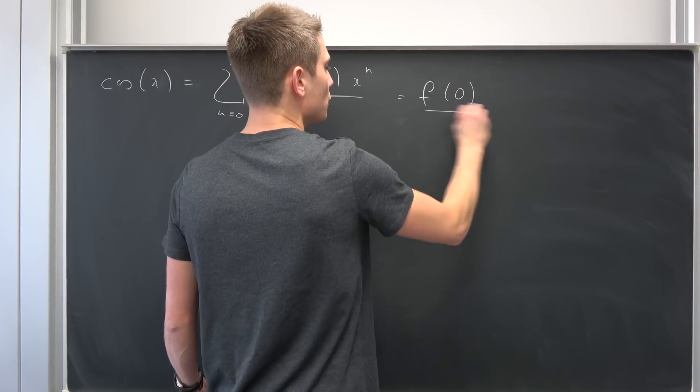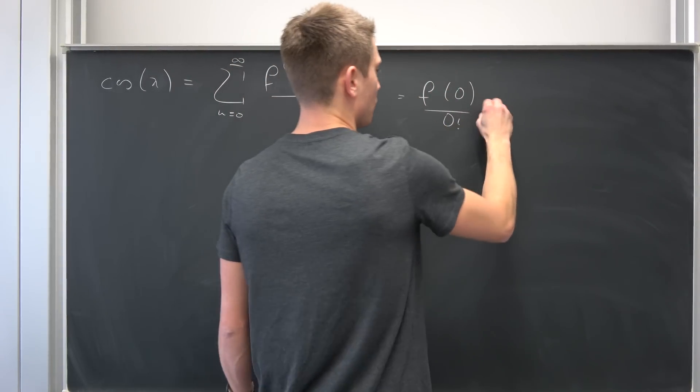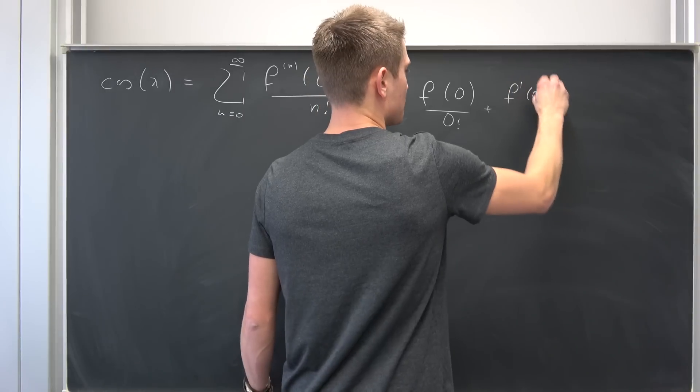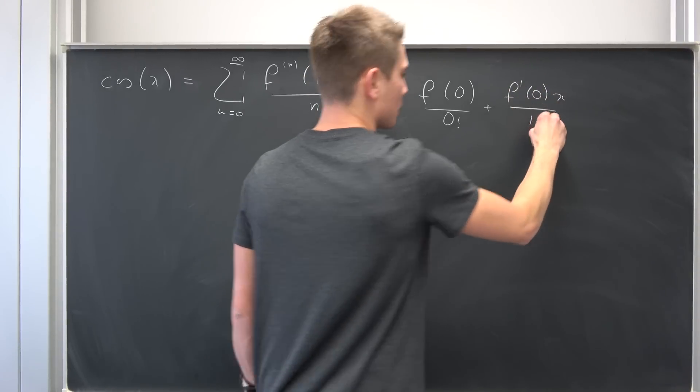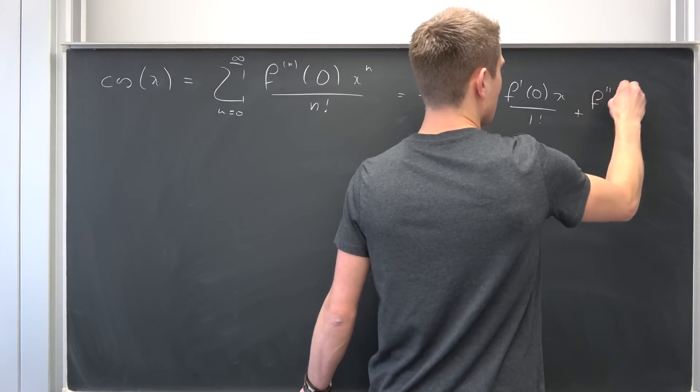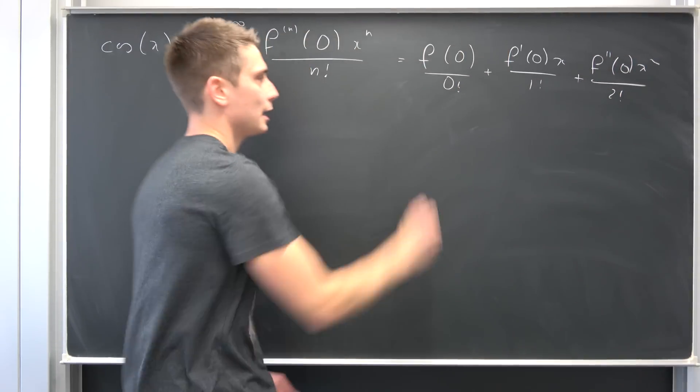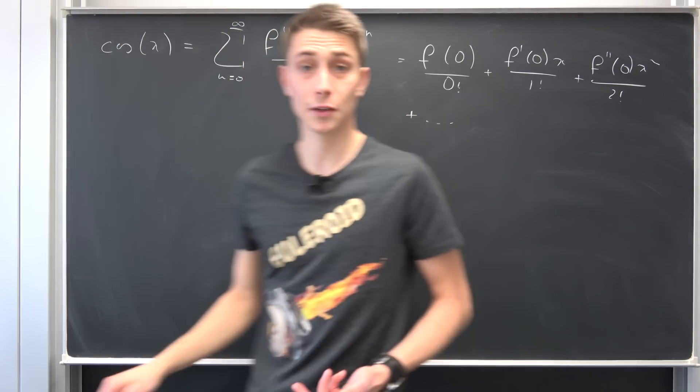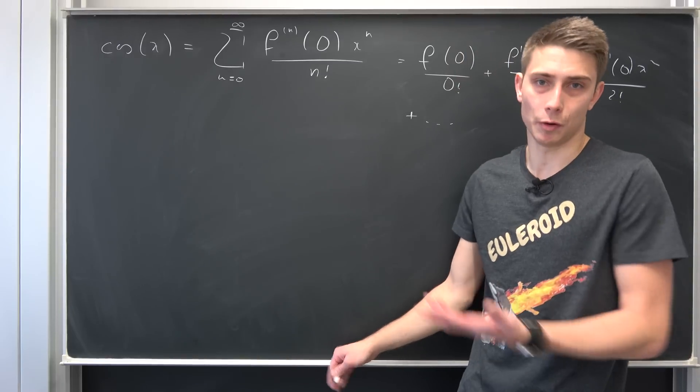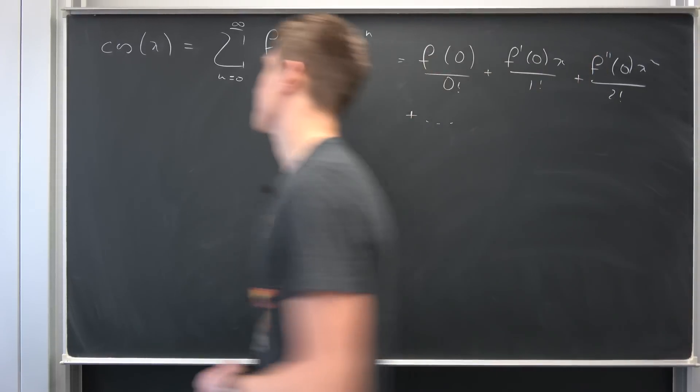So f of 0 over 0 factorial plus f prime of 0 times x over 1 factorial plus f double prime of 0 times x squared over 2 factorial and so on plus blah blah blah. Let's take a look at the first few derivatives of the cosine evaluated at zero.